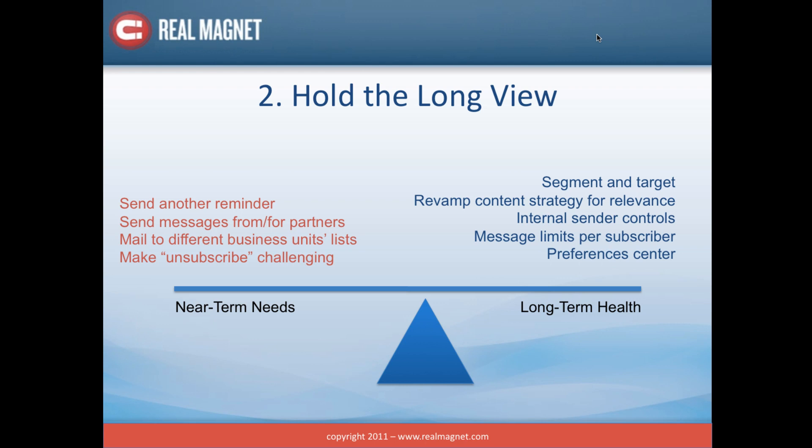The message is not to stop doing everything you know you need to do to drive your business forward. It's to look at the other side of this balancing act and make sure you're finding ways to replenish that asset. Segment and target, for example — find ways to be more relevant with the messages you're sending, and send fewer messages if you can't be relevant. The better you target your messages, the more you can mail to the people you're targeting, and the number of messages reaching a prospect who's actually looking forward to that content begins to increase.